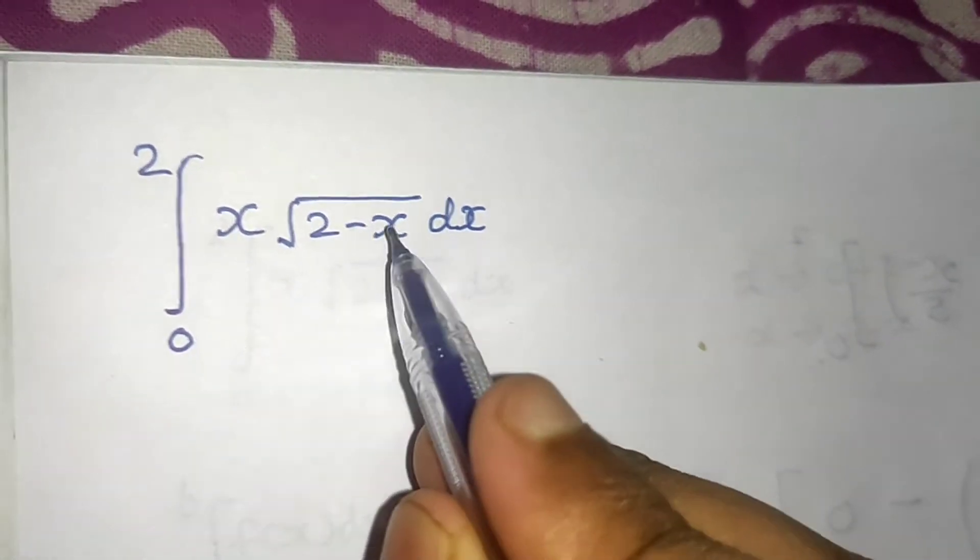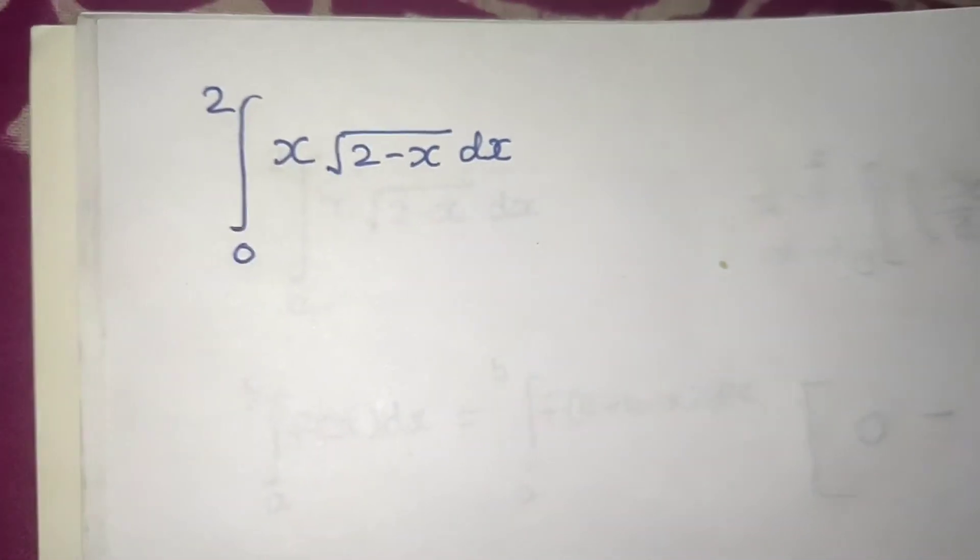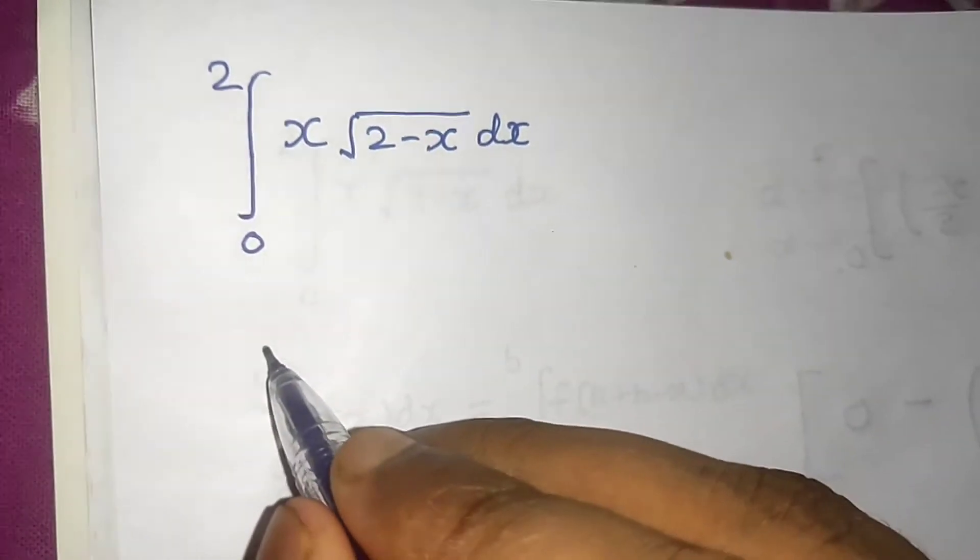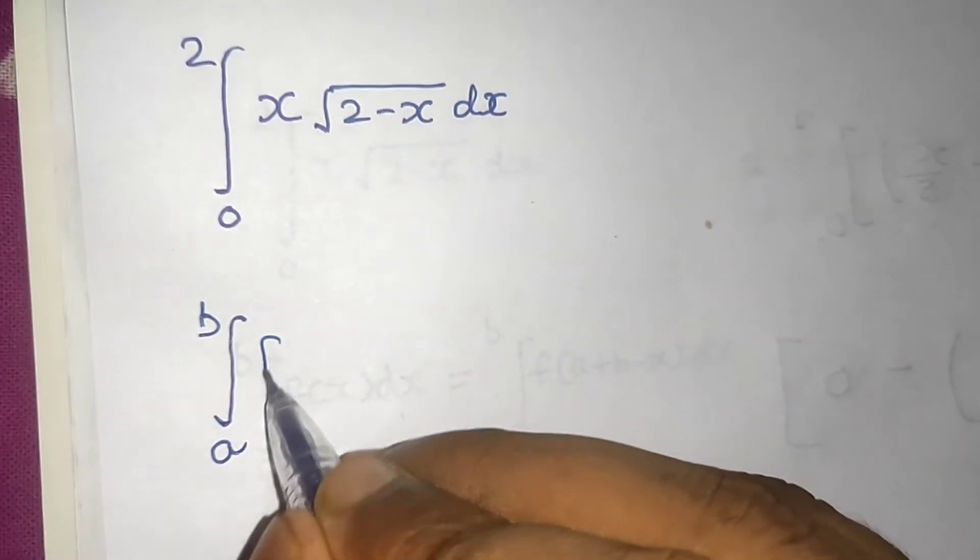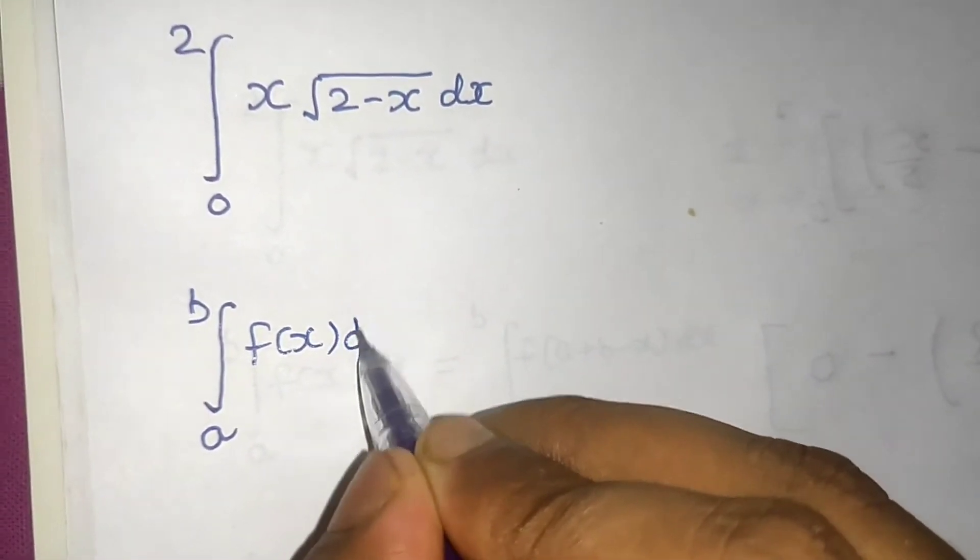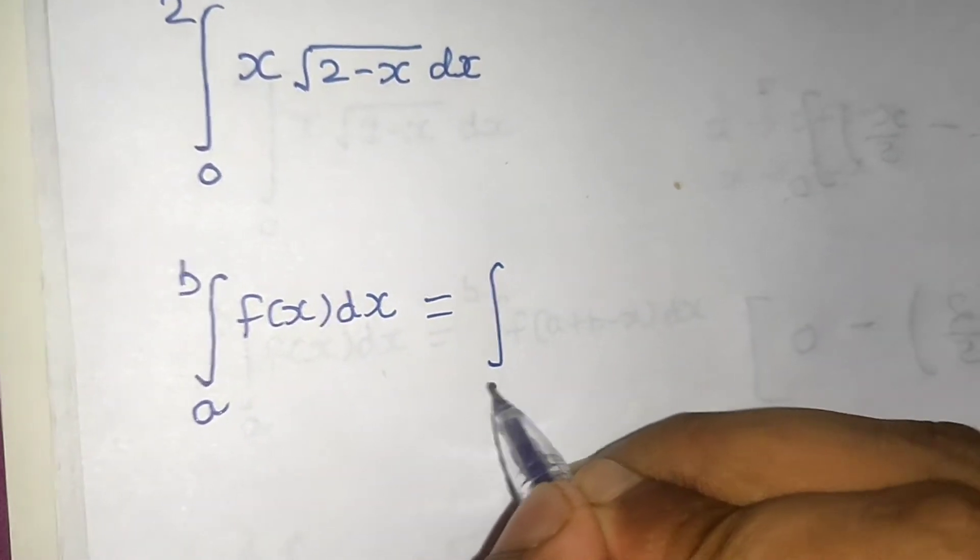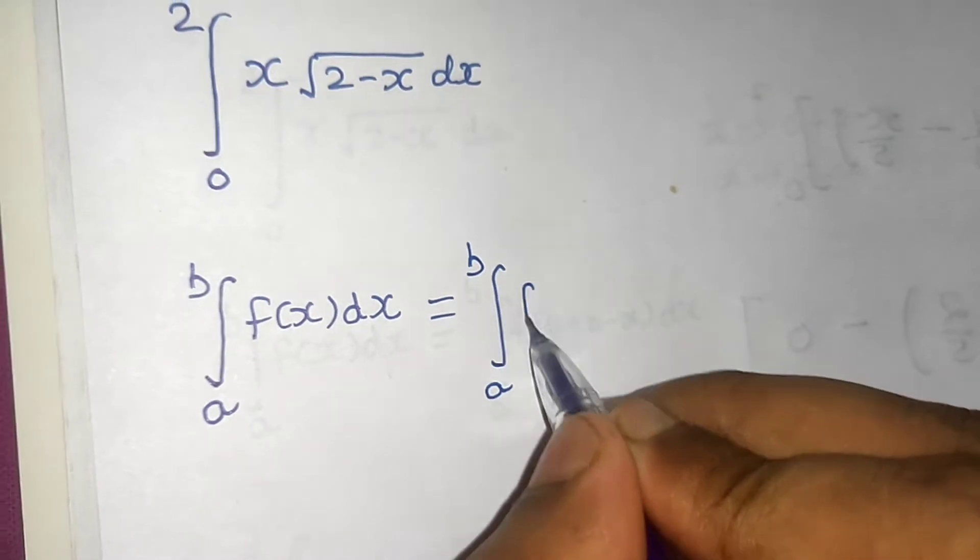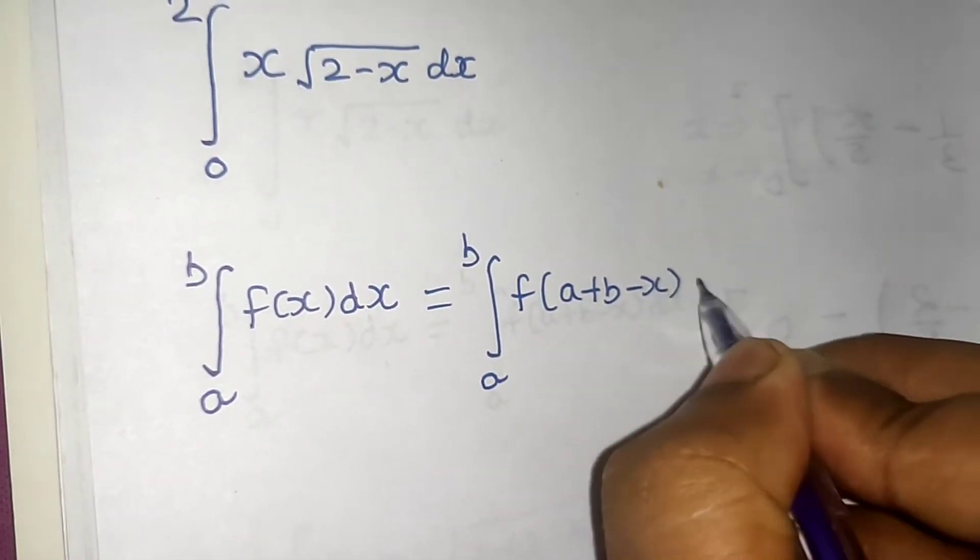Just because I can see this 2 minus x, I can recall one property of definite integration that integral from a to b f(x) dx can also be written as integral from a to b f of a plus b minus x dx.